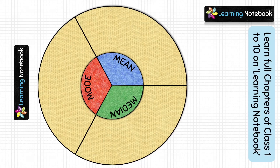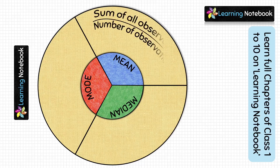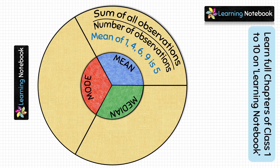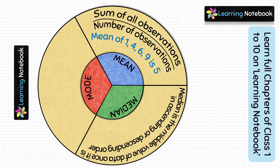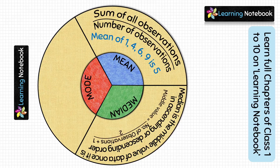Now let's write on the model. Mean is the sum of all observations divided by the number of observations — for example, the mean of 1, 4, 6, and 9 is 5. Similarly, write about median: it is the middle value of the data once organized in ascending or descending order, found using the formula (number of observations plus 1) divided by 2. For example, the median of 1, 2, 4, 7, and 9 is 4.